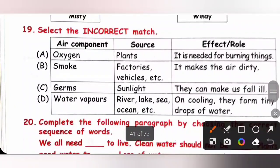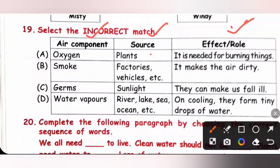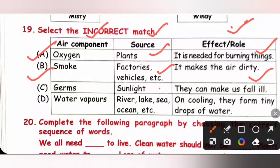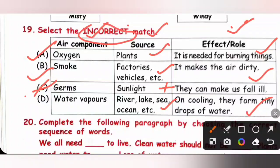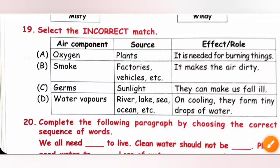Question 19: Select the incorrect match from the table of air components, source, and effect. A oxygen — source: plants, needed for burning — correct. B smoke — source: factories, vehicles — makes air dirty — correct. C germs — source: sunlight — incorrect, because sunlight is not the source of germs. D water vapour — source: river, lake, sea, ocean — on cooling they form tiny drops of water — correct. We need to select the incorrect match, so option C is the correct answer.